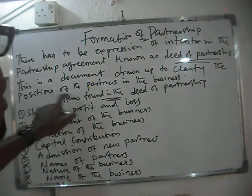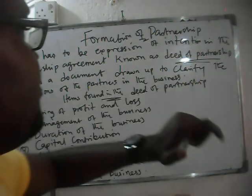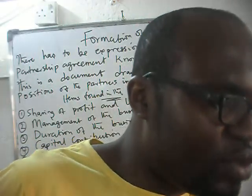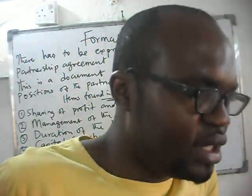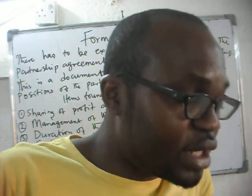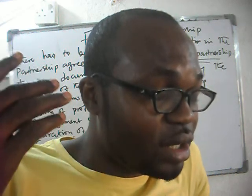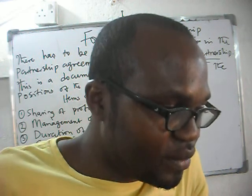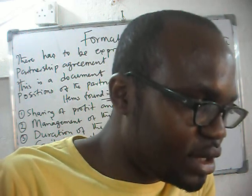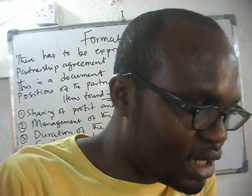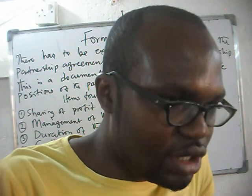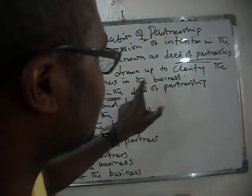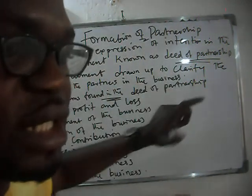The deed of partnership is a document drawn up to clarify the positions of the partners in the business — so that when we make 10 million, we know how to share it. The person doing most of the work might take 7 million and the other 3 million. All those agreements have to be stated in an agreement known as the deed of partnership.